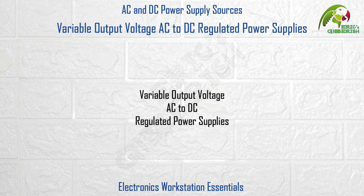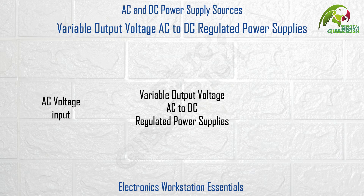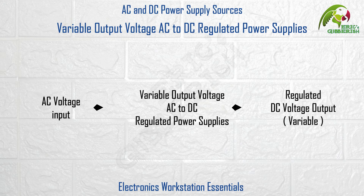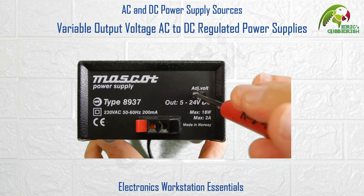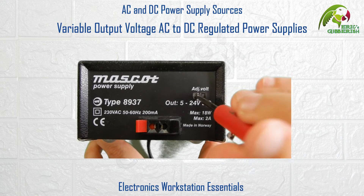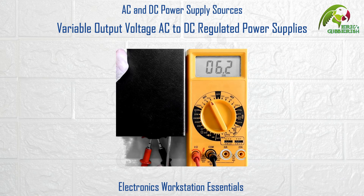Variable output voltage AC to DC regulated power supplies. These types of DC power supply sources also convert an AC voltage input into a regulated DC voltage output, but the magnitude of this DC output voltage is variable. Such as this 5V to 24V DC power supply. It has a voltage adjust screw using which you can vary the DC output voltage from around 5V DC to around 24V DC.